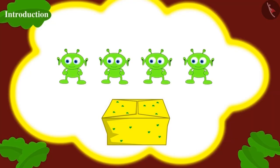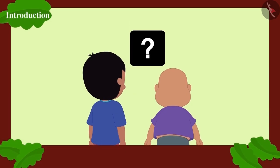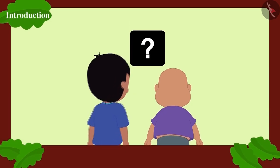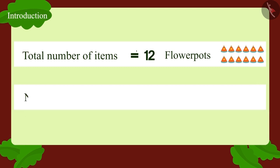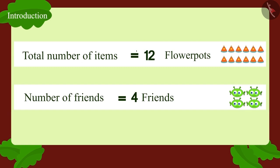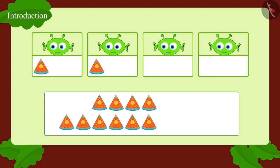Now they are thinking: if they have to divide the flower pots equally among all of Jeev's friends, how many flower pots will each friend get? Children, can you help Raju and Bablu find the answer? The total number of objects is 12 flower pots, to be divided among four friends. First, we will give one flower pot to each friend — how many flower pots are left? Eight!